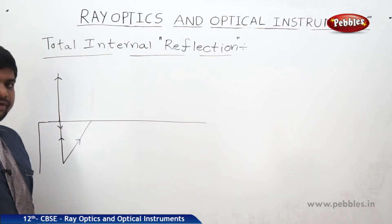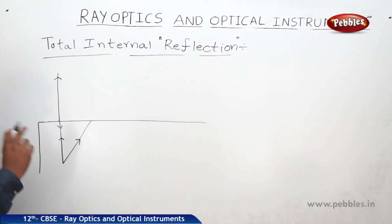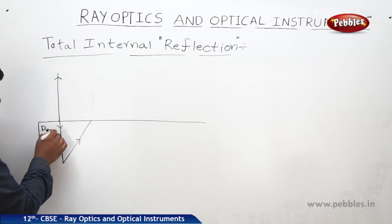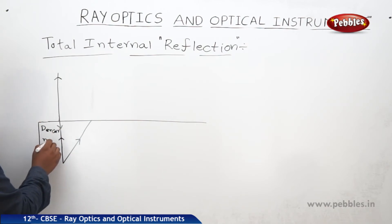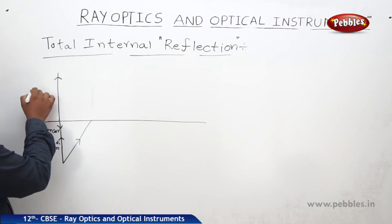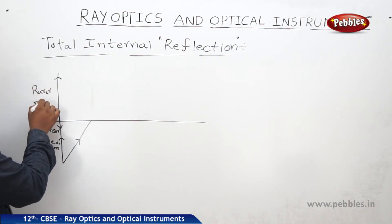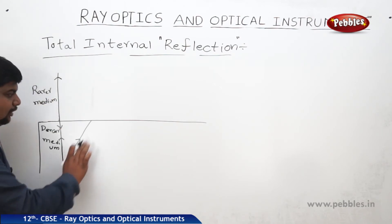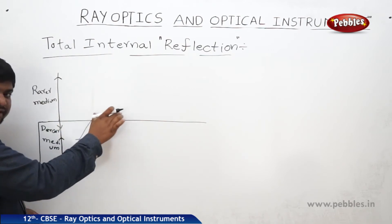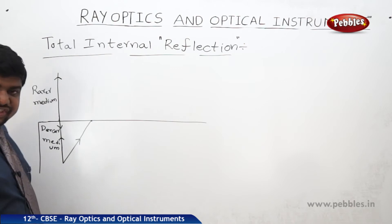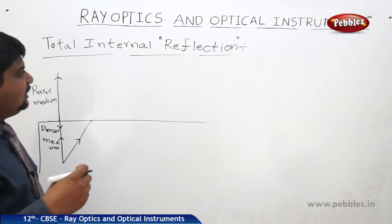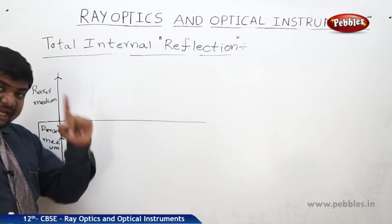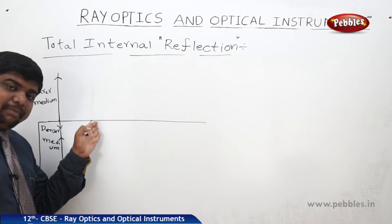We are trying to visualize the concept of total internal reflection. Let us suppose one light ray is traveling from a denser medium to a rarer medium. This is the denser medium, this is the rarer medium. The incident light travels from the denser medium onto the top surface of the denser medium, making an angle of incidence. In the case of total internal reflection, we should consider two cases.